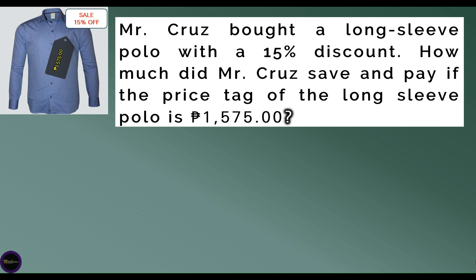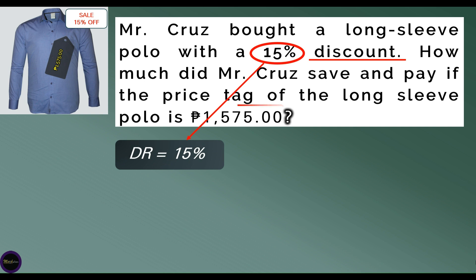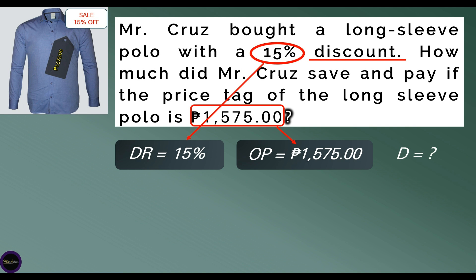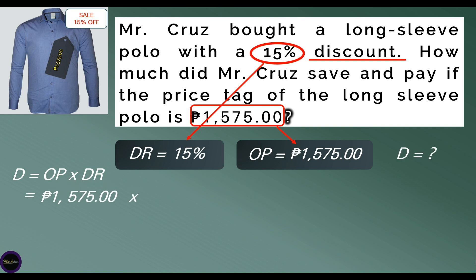Let's take a look at another example. Mr. Cruz bought a long-sleeved polo with a 15% discount. How much did Mr. Cruz save and pay if the price tag of the long-sleeved polo is 1,575 pesos? The given details are: 15% is the discount rate, and 1,575 pesos is the original price. The discount is missing, so we use the formula: D equals OP times DR.